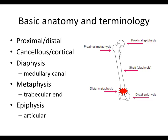Some key terms: proximal and distal; cancellous and cortical; the diaphysis of the bone, which has the medullary canal; the metaphysis, which is the trabecular end at both the proximal and distal ends; and the epiphysis, which is the articular surface. In common clinical speak, you won't hear the term epiphysis used much — we usually talk about the articular surface or joint surface, which represents the articular epiphyseal end of the bone.